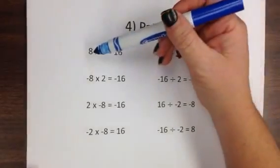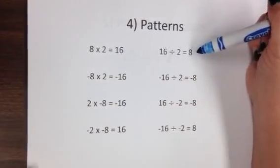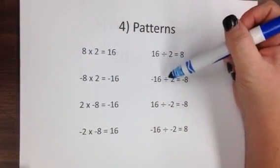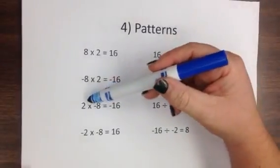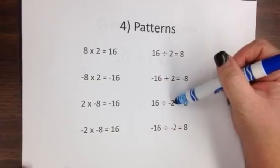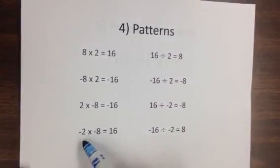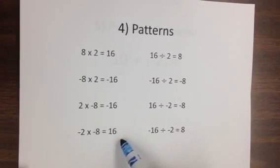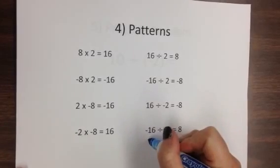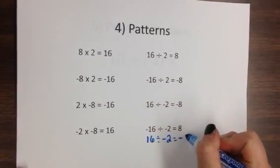Now your patterns, you should notice. If eight times two is 16, then 16 divided by two is eight. If negative eight times two is negative 16, then negative 16 divided by two is negative eight. Two times negative eight is negative 16, then 16 divided by negative two would be negative eight. But then if negative two times negative eight is a positive 16, then, oh, this is written backwards here. This would be a positive 16 divided by negative two equals negative eight.